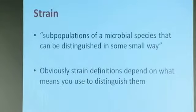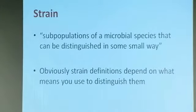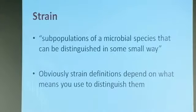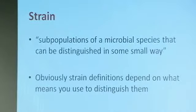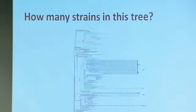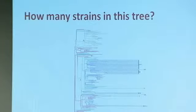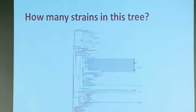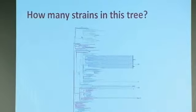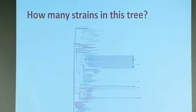This is a textbook definition of strain: subpopulations of a microbial species that can be distinguished in some small way. This is not a particularly helpful definition, because strain definitions depend on whichever small way you're using to distinguish them. From Nick's talk, how many strains are there in that tree? If you say it can be distinguished by sequencing, there are 240 of them. On the other hand, the PMEN1 lineage are all the same strain, in inverted commas.